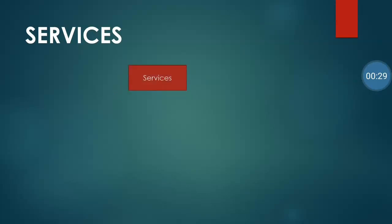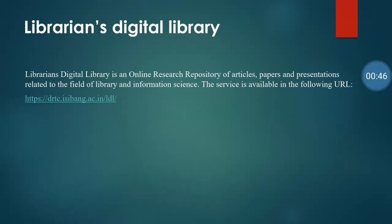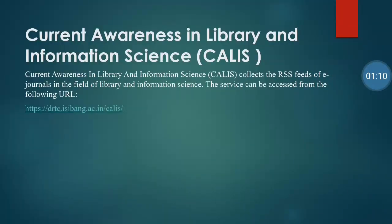DRTC also provides two services: one is the Librarians Digital Library and the next is CALIS. The Librarians Digital Library is an online research repository of articles, papers, and presentations related to the field of library and information science, accessible via its URL. CALIS stands for Current Awareness in Library and Information Science, which collects the RSS feeds of journals in the field of library and information science, also accessible from its URL.